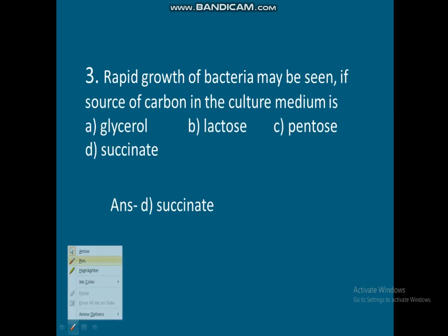Question 3: Rapid growth of bacteria may be seen if the source of carbon in the culture medium is — Option A: Glycerol. Option B: Lactose. Option C: Pentose. Option D: Succinate. Correct answer is succinate. If succinate is used as the source of carbon, maximum rapid growth of bacteria occurs.